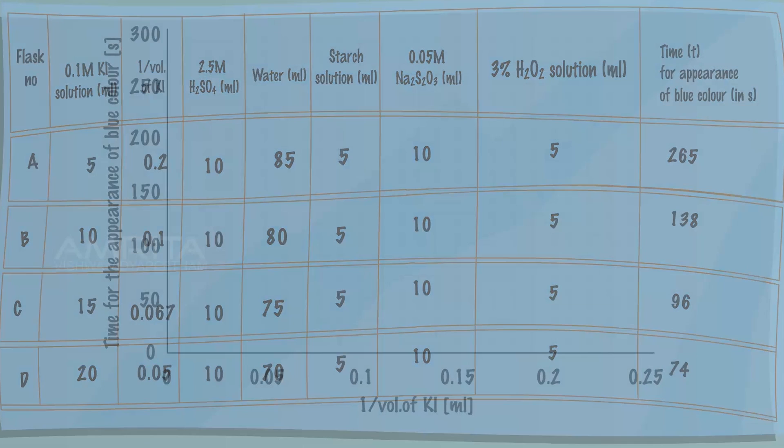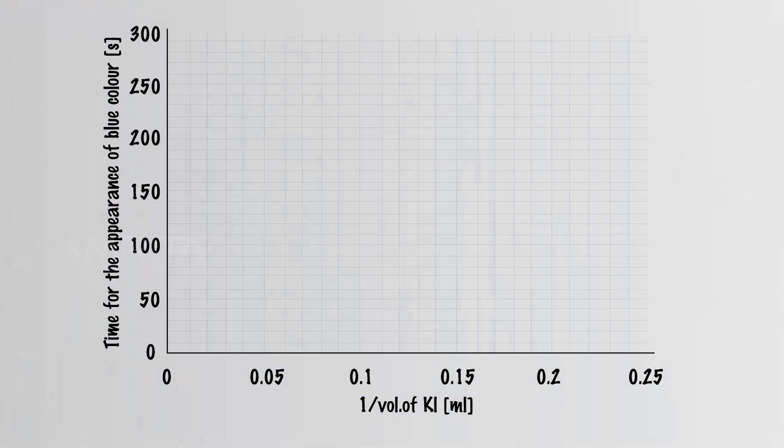Plot a graph between time taken for the appearance of blue colour and 1 by volume of potassium iodide, taking time along the ordinate and 1 by volume of potassium iodide along the abscissa. It should be a straight sloping line.